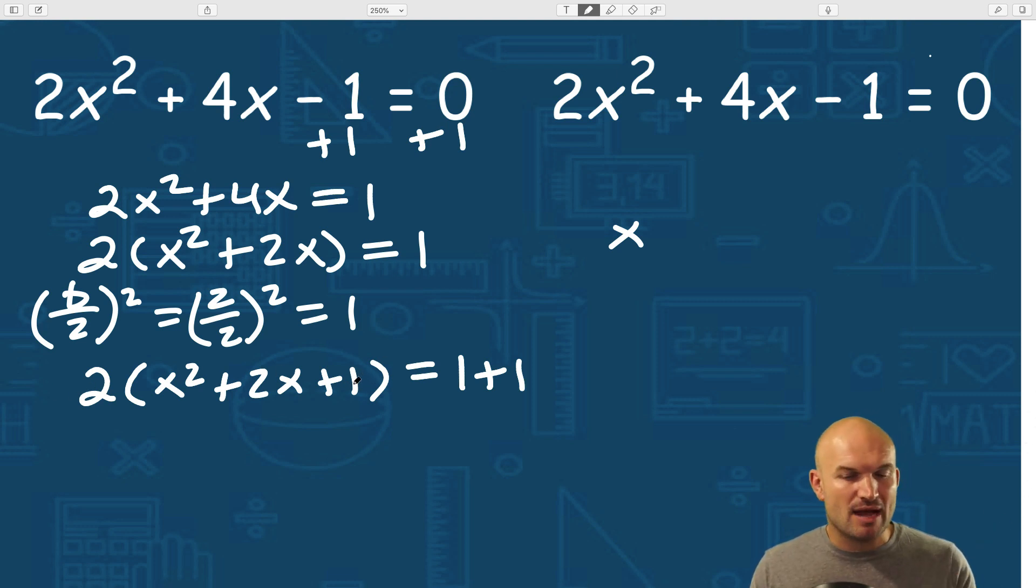Via the distributive property, we're adding one that's being multiplied by two. So when I add a one over here, I need to multiply by two on that side. And that's where students in this process usually get confused.